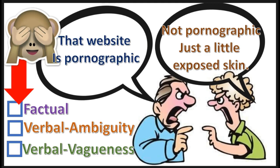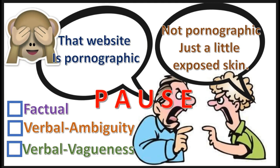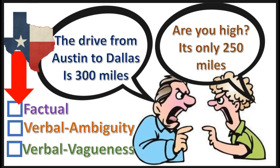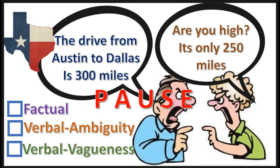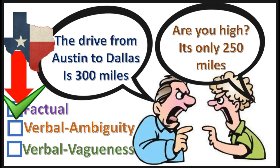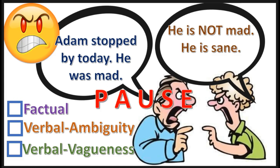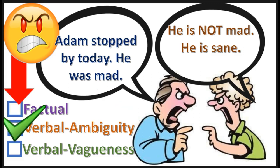Here's another practice problem — select the correct answer. Press pause, the answer will appear in three, two, one. That's right — verbal ambiguity. The word 'mad' can mean two different things.